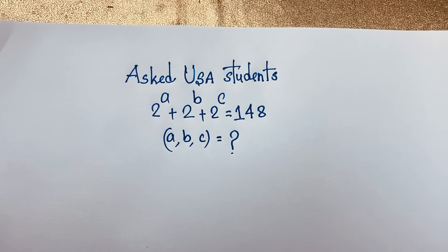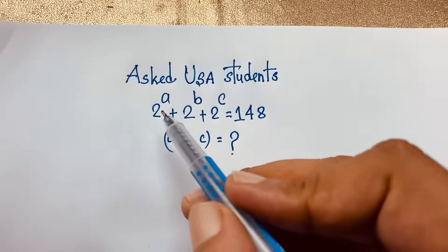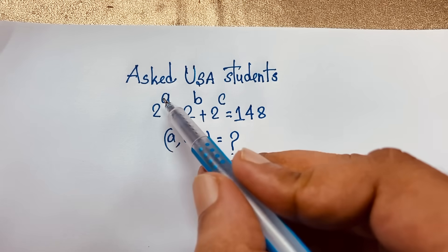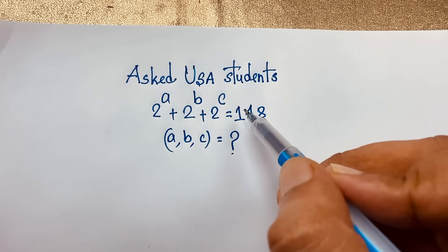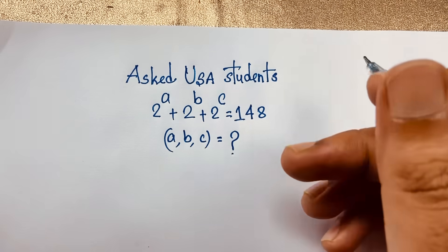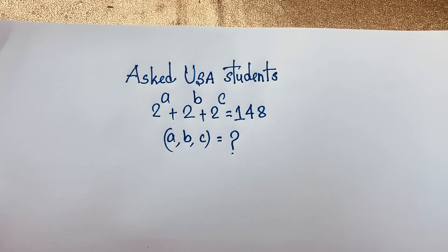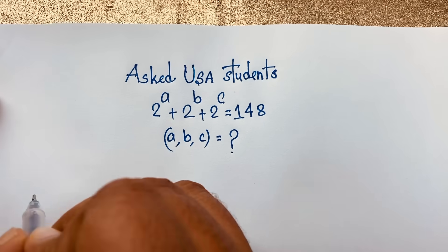Hello everyone, welcome to my YouTube channel, welcome to Rasha's Classroom. Today we have an interesting Math Olympiad question: 2 to the power a plus 2 to the power b plus 2 to the power c is equal to 148. What is abc? How to solve this interesting viral Math Olympiad question?